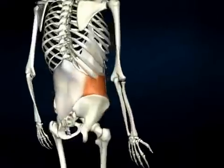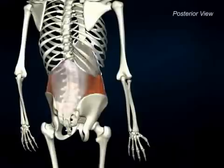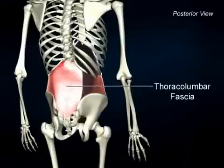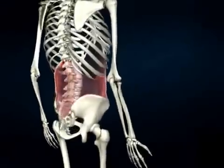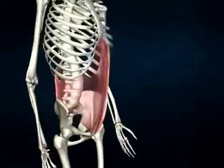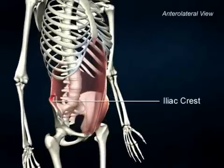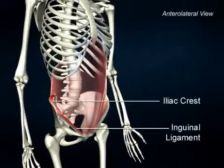The origins of the internal obliques are from the thoracolumbar fascia, the iliac crests, and the inguinal ligaments.